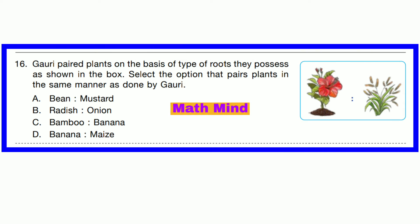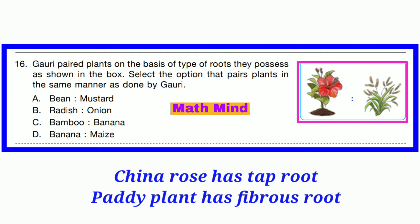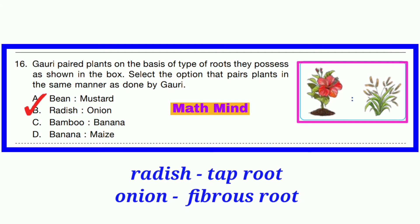Question number 16. Gowri paired plants on the basis of type of roots they possess as shown in the box. Select the option that pairs plants in the same manner as done by Gowri. The relation given is China rose plant to paddy plant. China rose has a tap root, but paddy plant has a fibrous root. So option B is correct: radish has a tap root and onion has a fibrous root.